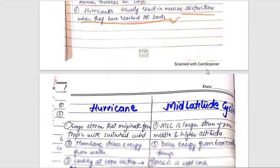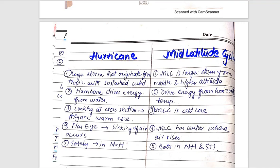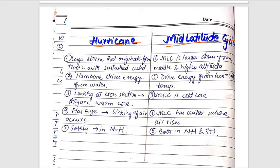Hurricane versus mid-latitude cyclone: hurricanes are large storms that originate from the tropics with sustained winds. Mid-latitude cyclones are large storms from middle and higher latitudes. Just a little difference between them.